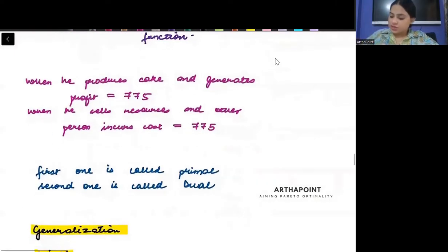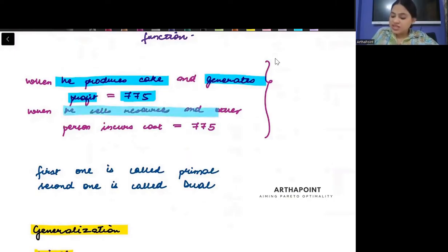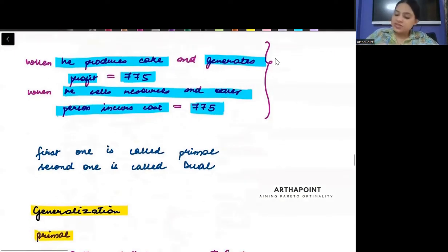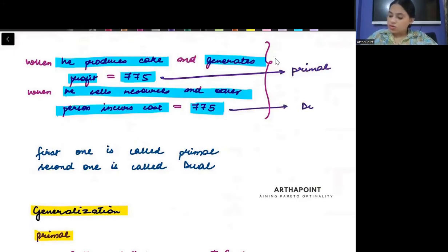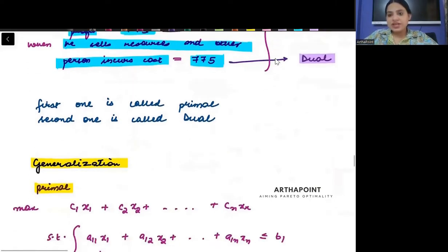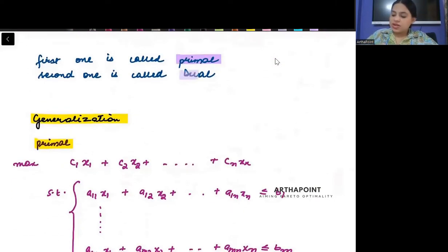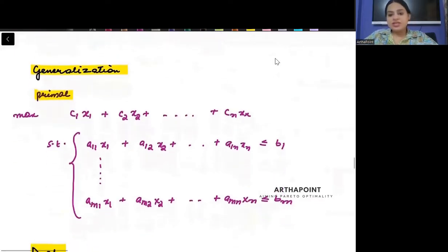Try to see what it is saying. When he produces cake and generates profit, it is 775. But when he sells resources and incurs a cost, that cost is also 775. So this first method that we did earlier, this is called the primal. And this second method that we do now, this is called the dual. Is this clear to everyone?